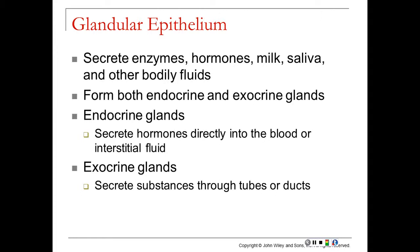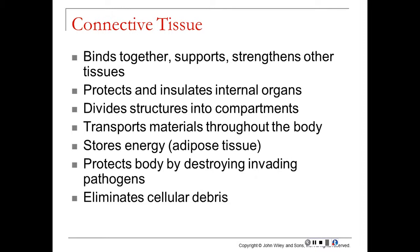Glandular epithelium includes glands that secrete enzymes, hormones, milk, saliva, sweat, oil, and other body fluids. These come from both endocrine and exocrine glands. Endocrine glands secrete hormones into the blood or interstitial fluid, while exocrine glands secrete through a duct — sweat and oil glands are exocrine, while the testes and ovaries are endocrine glands.